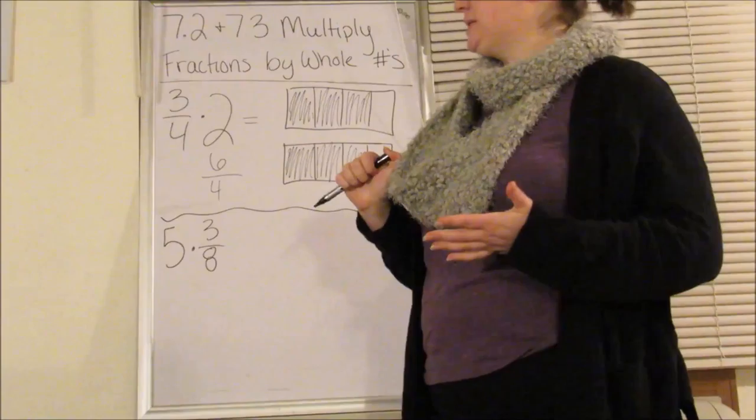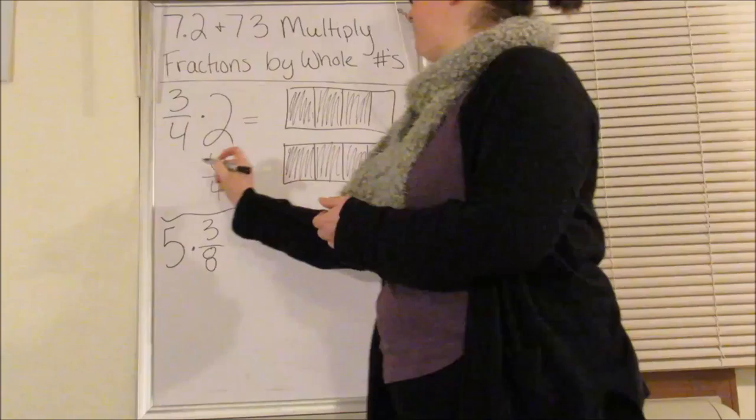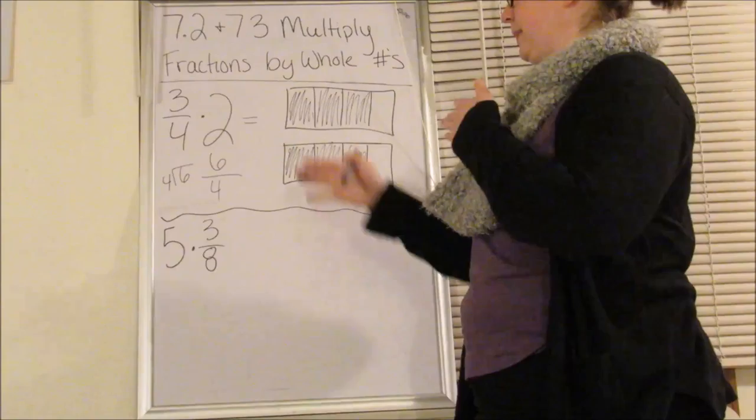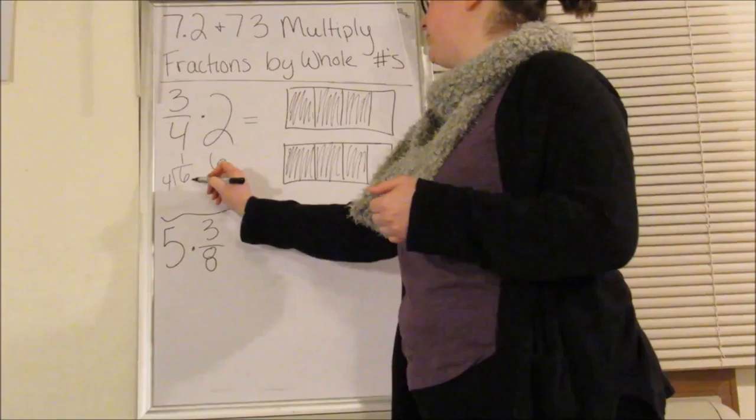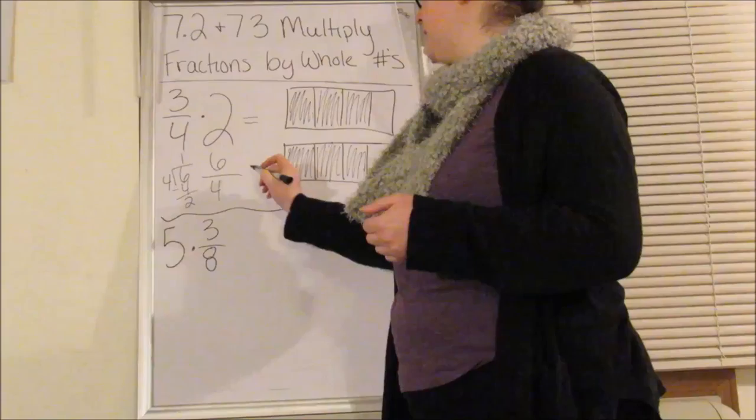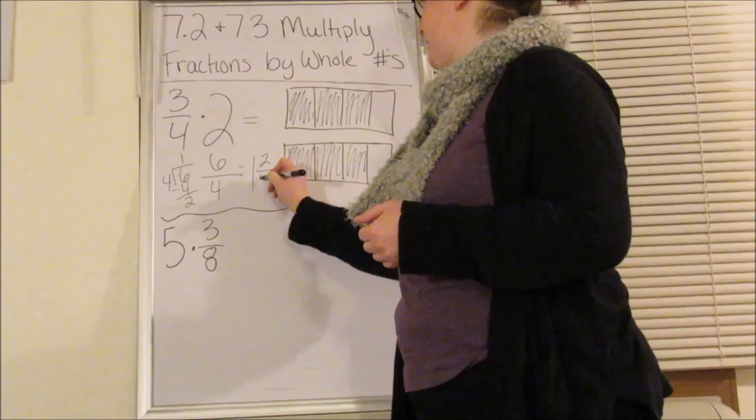I can't leave my answer with a numerator being greater than the denominator. So I need to convert it to a mixed number. I want to divide six by four because that's how I convert when my numerator is bigger than my denominator. Four goes into six one time. One times four is four. I subtract and I have two.